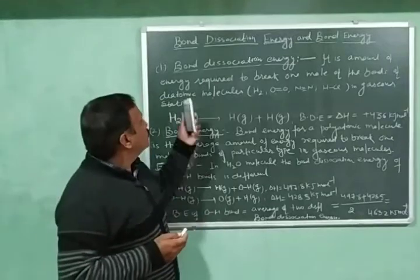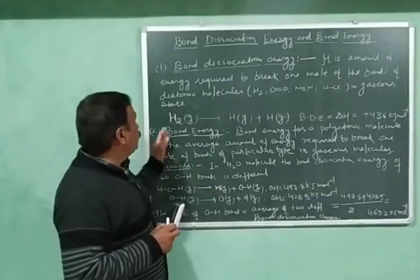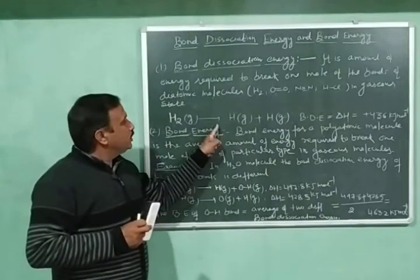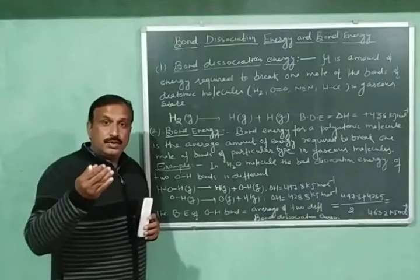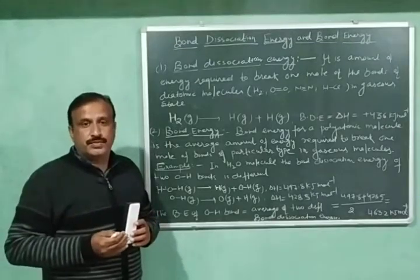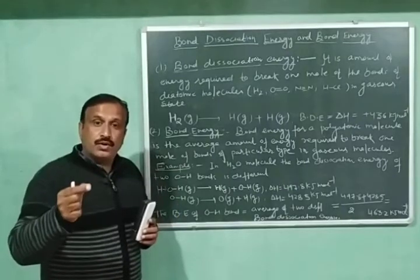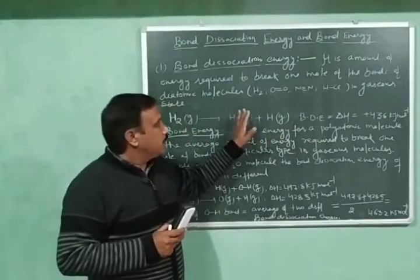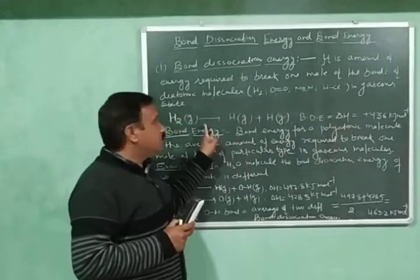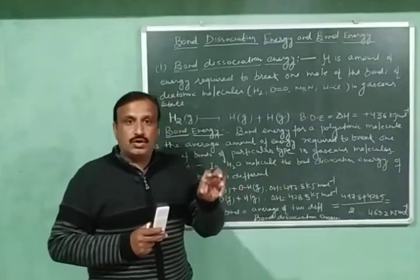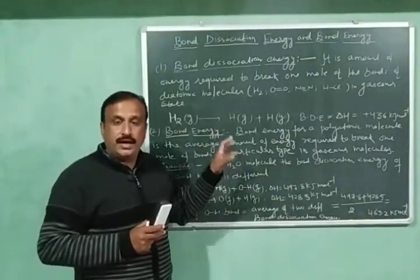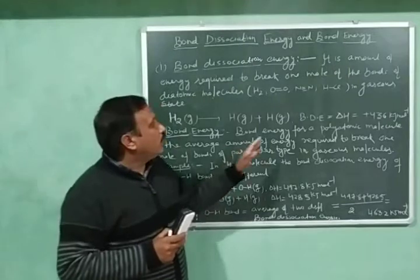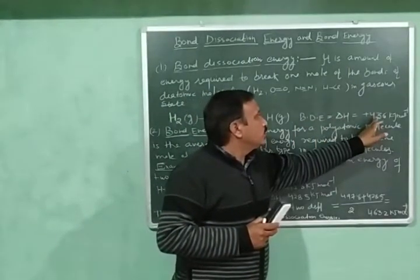Let us explain bond dissociation energy with an example using the hydrogen molecule. One mole of hydrogen molecules — that is, Avogadro's number of molecules — is dissociated into atoms, meaning Avogadro's number of bonds are broken. The bond dissociation energy equals the energy absorbed during this reaction, that is delta H, because this reaction is carried out at constant pressure. The value of bond dissociation energy, delta H, is equal to 436 kJ per mole.